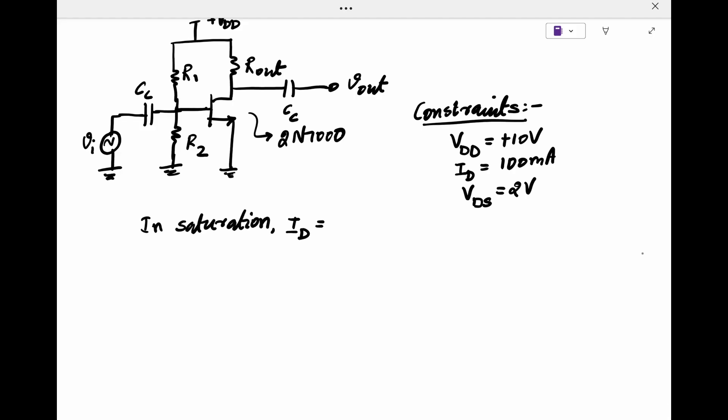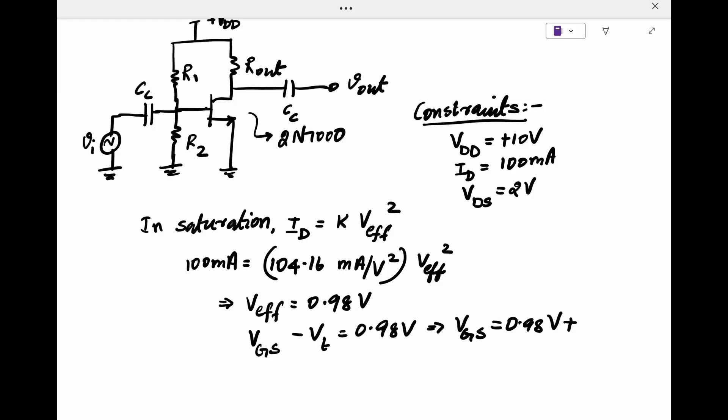Substituting the drain current constraint in saturation, we get a V effective of 3.08 volts. To calculate the voltage gain, we need two things: the transconductance at this operating point and the output impedance.